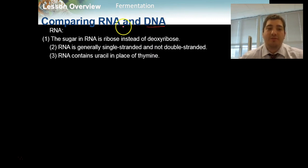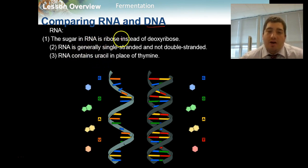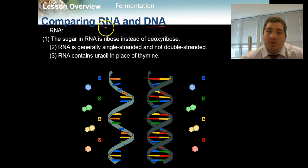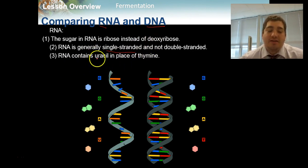There are three different things about RNA which we should know about. The sugar in RNA is ribose instead of deoxyribose, and that's why we have RNA instead of DNA. Generally, and most of the time for what we'll talk about, RNA is a single-stranded molecule, not double-stranded. And finally, RNA contains the nucleotide uracil in place of thymine.